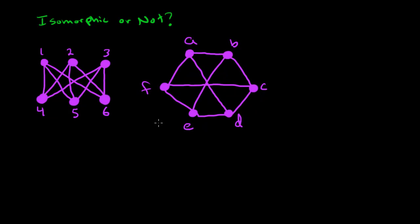In this video, we're going to talk about how to determine if two graphs are isomorphic or not. Let's take a look at the first example. If two graphs are isomorphic, certainly they need to have the same number of vertices.